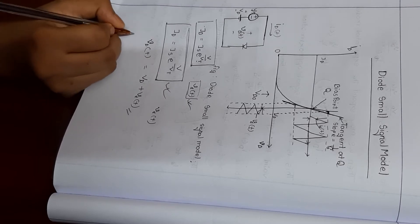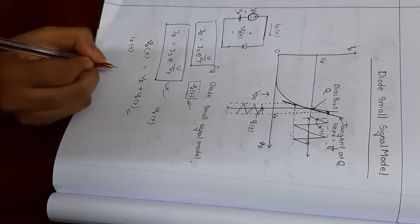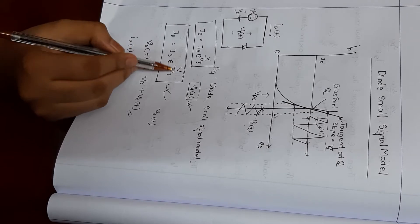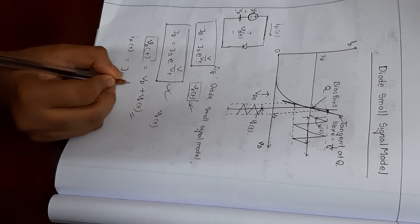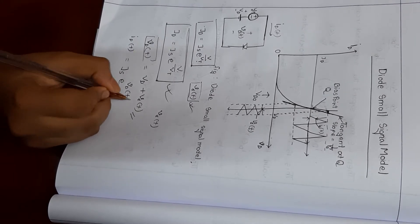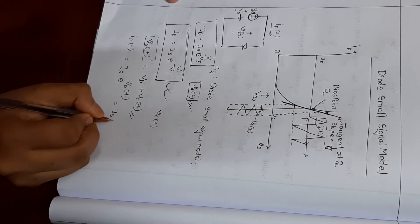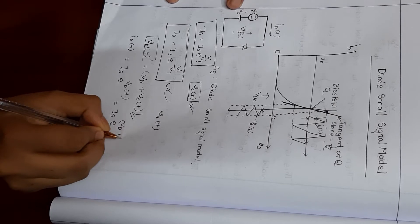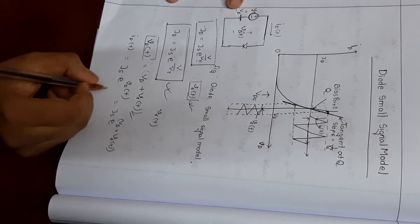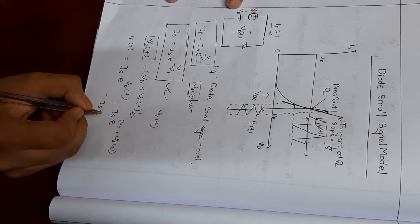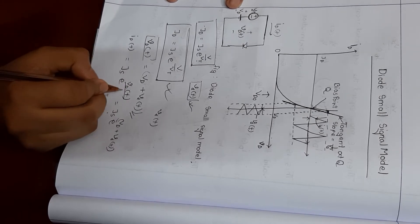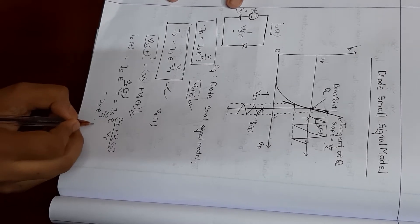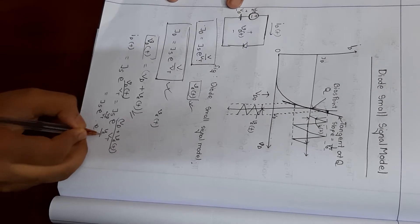The equation of the current will be: I_D(t) is equal to I_S times e to the power of the instantaneous voltage. Since V_D(t) is the summation of V_D plus V_D(t), the equation becomes I_S times e to the power (V_D plus V_D(t)) divided by V_T. This can be split as I_S times e to the power V_D over V_T, multiplied by e to the power V_D(t) over V_T.